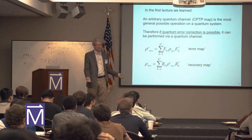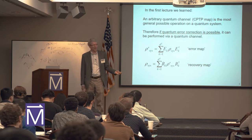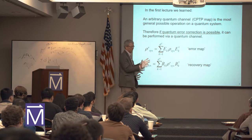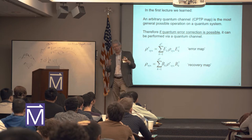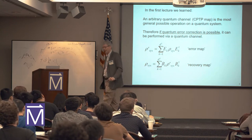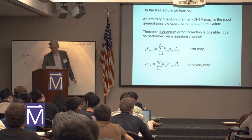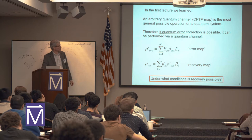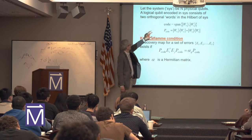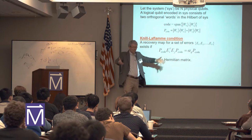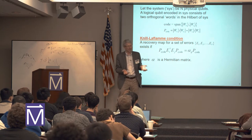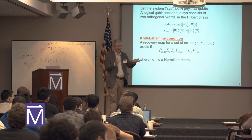If I have a single qubit and it has an error, there's no way I'm going to recover from that. But if I have a logical qubit with n physical qubits and some very clever encoding scheme, maybe there are conditions that allow this recovery map to exist. The system is n physical qubits forming a logical qubit — one qubit's worth of logical information stored in some cleverly entangled state.